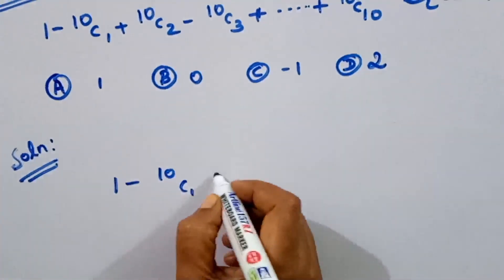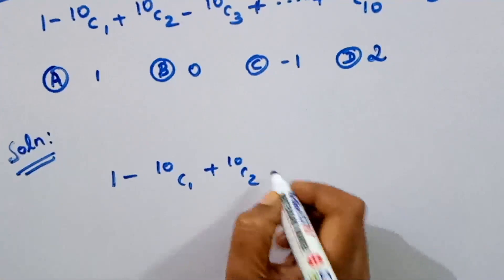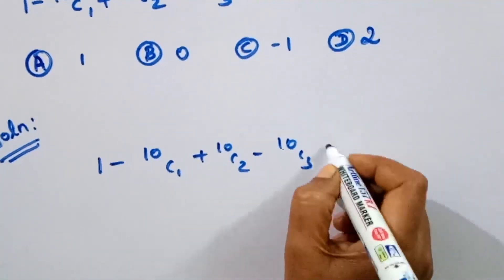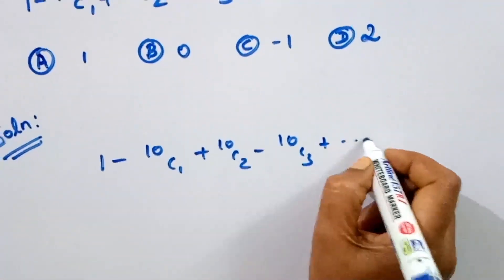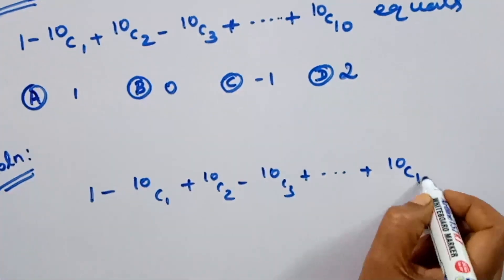The series terms are: 1 minus 10c1, plus 10c2, minus 10c3, and so on up to 10c10. We will discuss the values of each term.